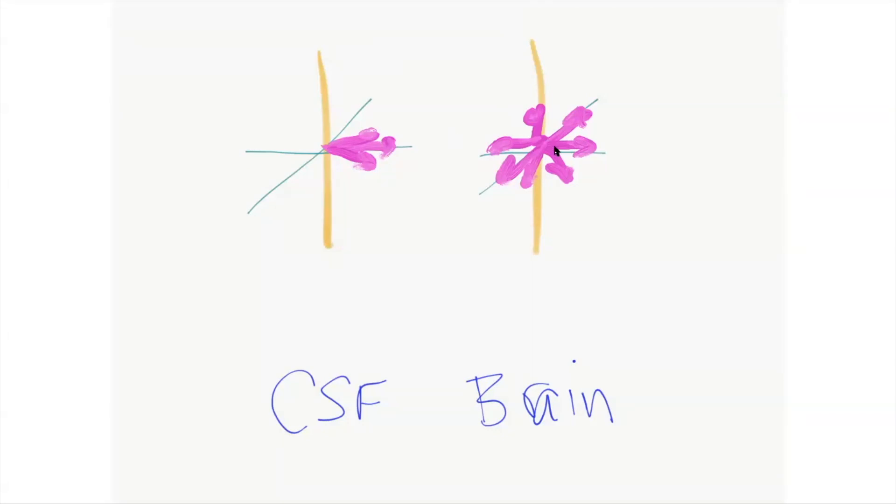Eventually, these spins will dephase and arrange themselves in this fashion, where you get no signal back when you listen with an antenna, because we've lost that phase coherence. The closer these stay together, the more phase coherence we have, the more signal we're going to get. It takes a longer time to lose phase with CSF than it does with solid tissue like the brain.